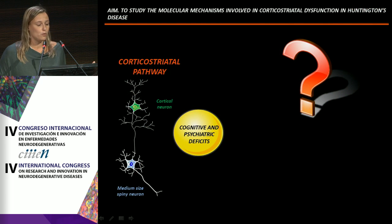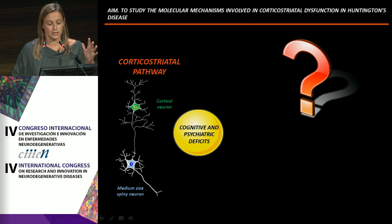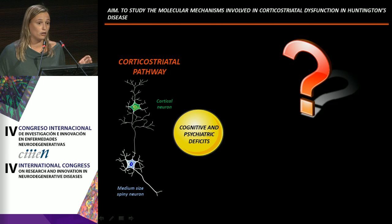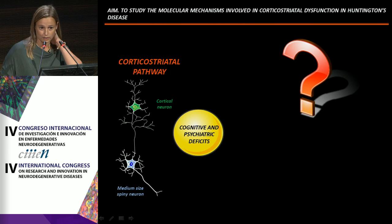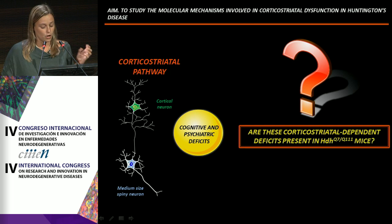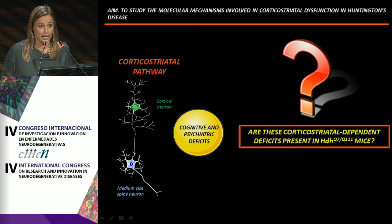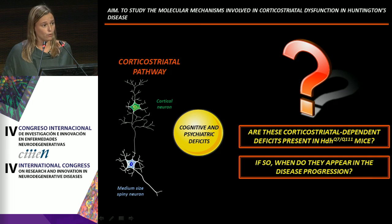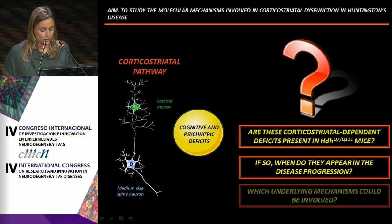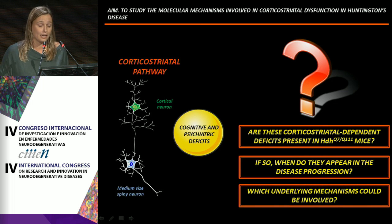Our aim was to study the molecular mechanisms involved in corticostriatal dysfunction in Huntington's disease. Our first question was whether deficits in the corticostriatal pathway were present in our knock-in animal, and if so, when do they appear in disease progression and which underlying mechanisms could be involved?